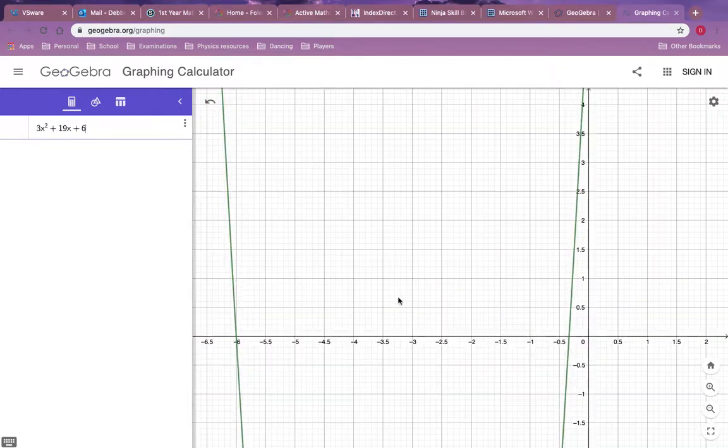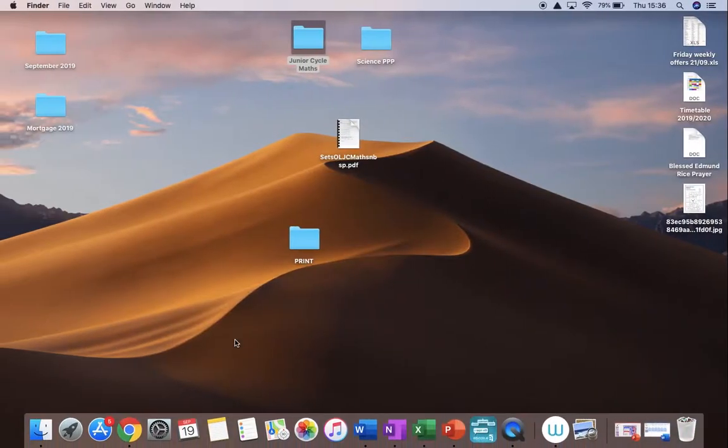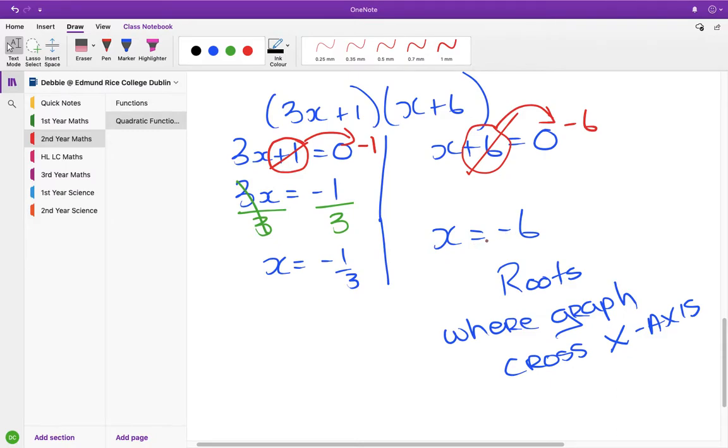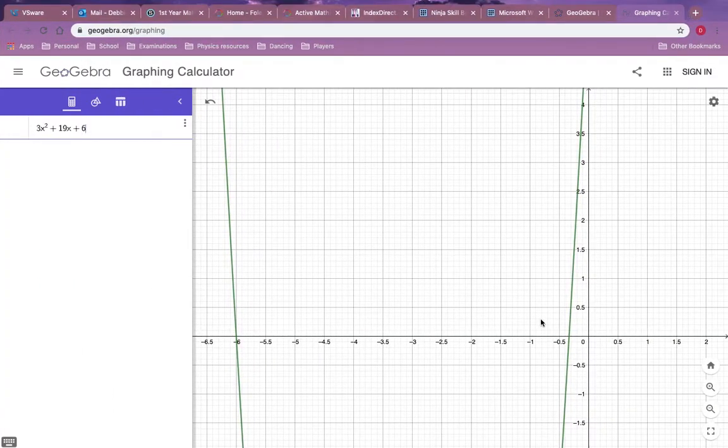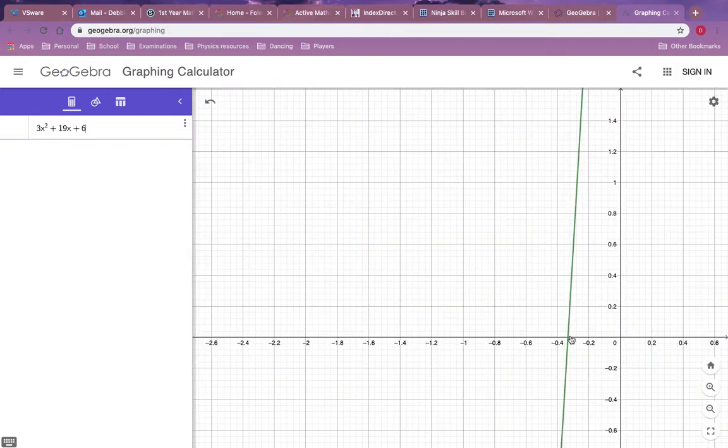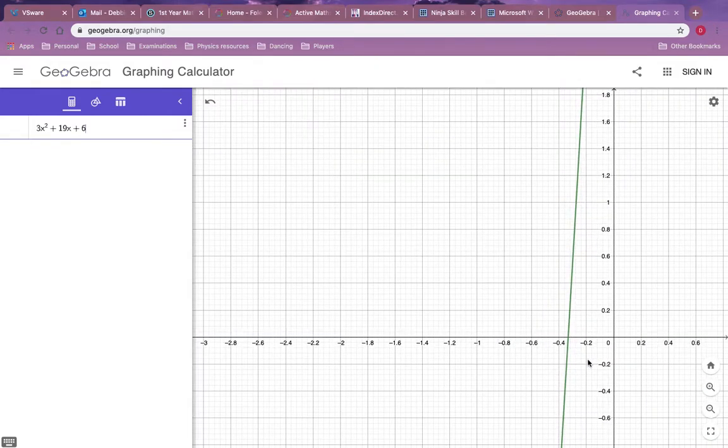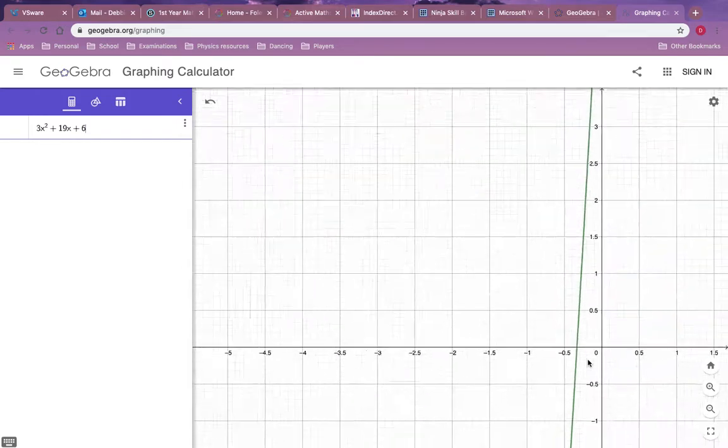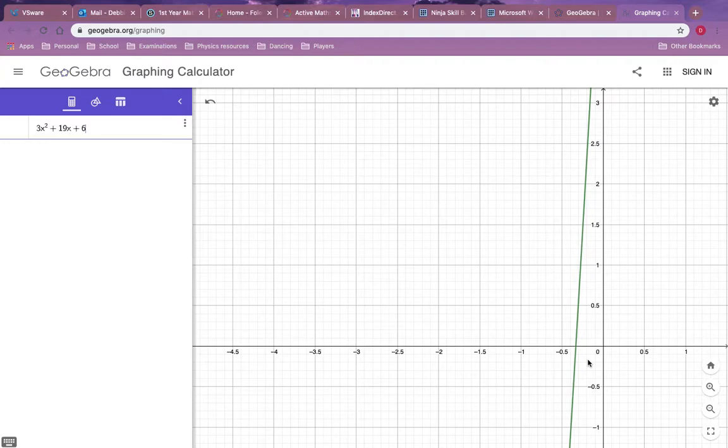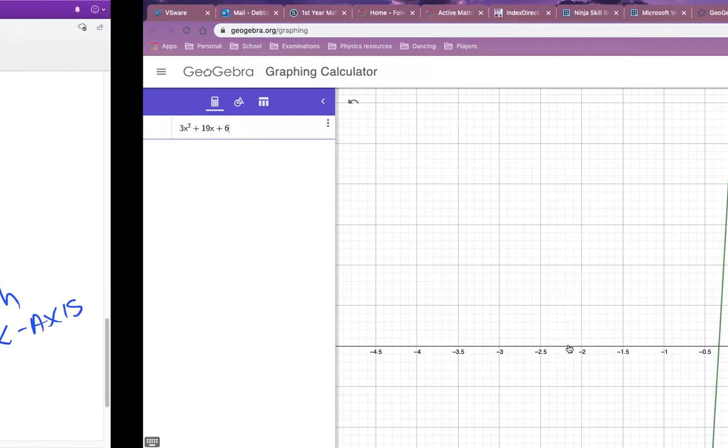If I zoom in. So definitely cutting there at minus 6, and that was one of our roots here. And then if you look here, you see it right in. Yeah, okay, there. So you can see here that there's minus, this is minus 1 half. So this part here is minus 1 third, or minus 0.33. And that is where it's cutting the x-axis.